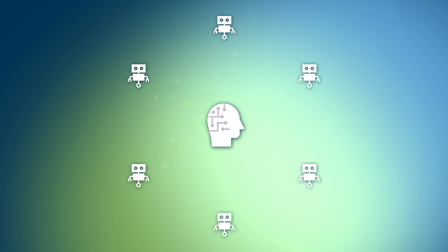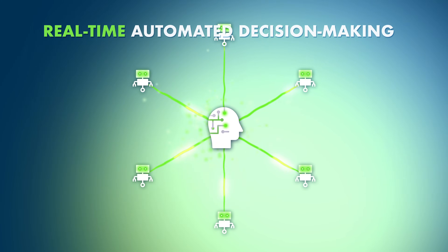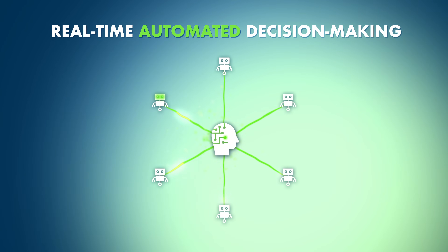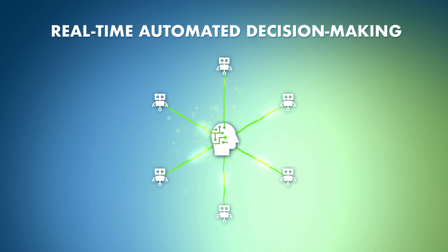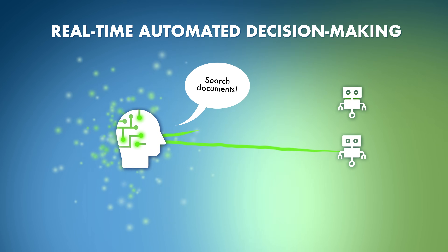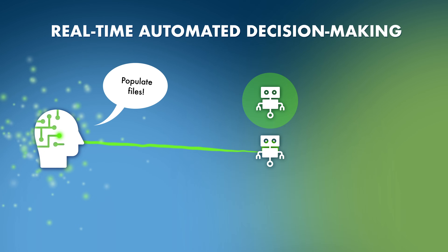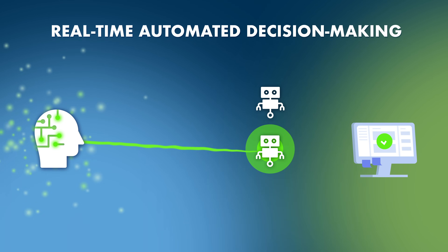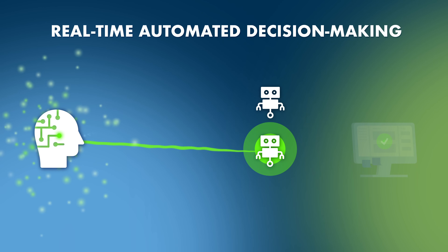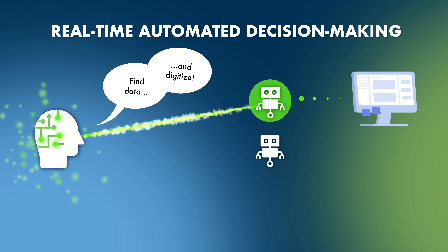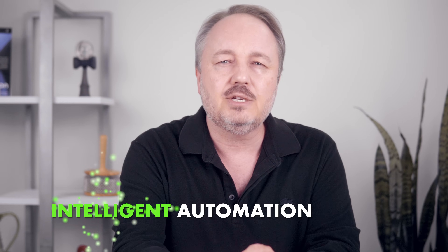In an environment with multiple RPA bots, an AI system can carry out real-time automated decision-making to autonomously instruct the bots to perform different tasks and to further augment those instructions when adapting to new circumstances. This form of sophisticated bot-driven business process automation is known as intelligent automation.